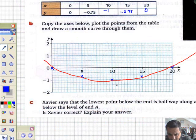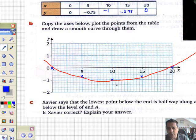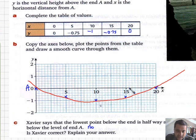Havier says that the lowest point below the end is halfway along and is 2 meters below the level of end A. Is he correct? No, he's not, is he? Because look, we're only 1 meter below the point A. A would be there and B would be there, I think.